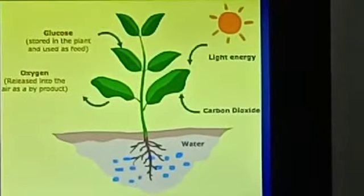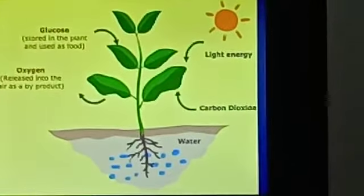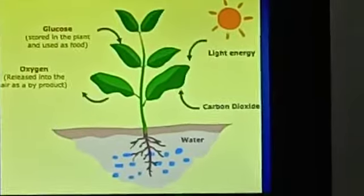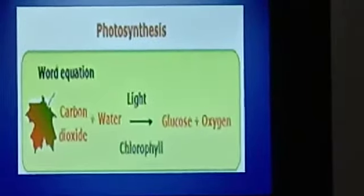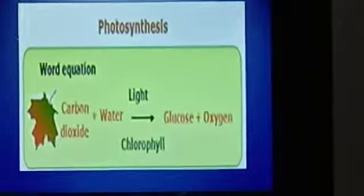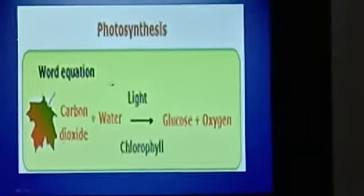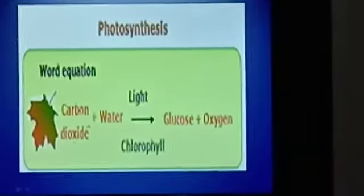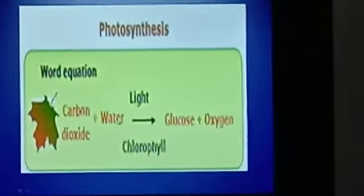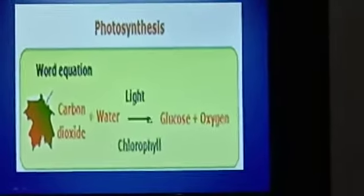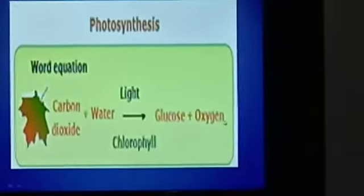Now, let us discuss the requirements for photosynthesis. First, let us see the word equation: carbon dioxide plus water, in the presence of sunlight and chlorophyll, produce glucose and oxygen.